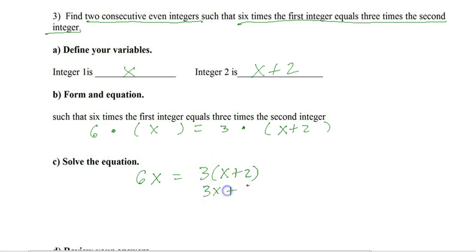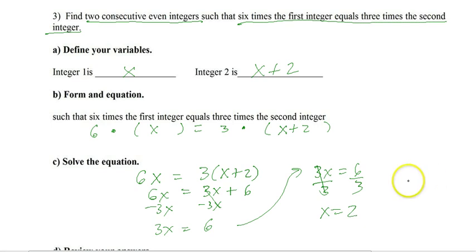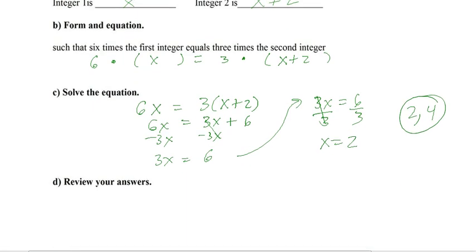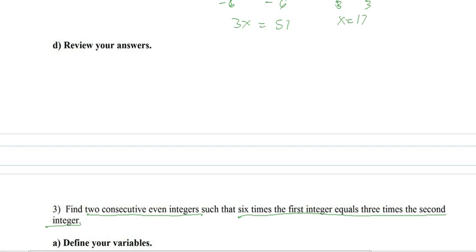Put the x's on one side. And then now we can divide. And that's our first consecutive even. So the answer will be 2 and 4. And how do we know we're correct? Let's answer it. It says 6 times the first equals 3 times the second. Is that true? Yes, it is. All right.